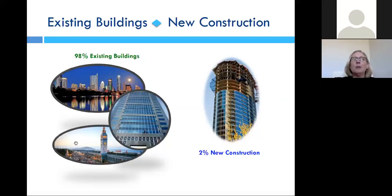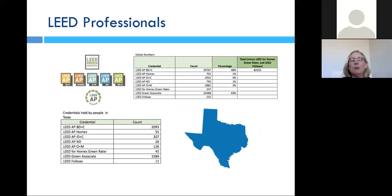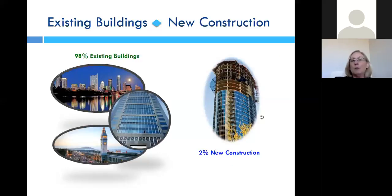An interesting factoid about buildings: if you consider all existing buildings today, 98% of all buildings at any given point are existing, and only 2% of buildings in our inventory are new construction. Going back to the credential numbers, you're looking at 48% of credentialed professionals in the new construction subcategory, while the professionals touching all the existing buildings are actually a minority. I would like to see these numbers reversed, because we can use all this information in our daily transactions.